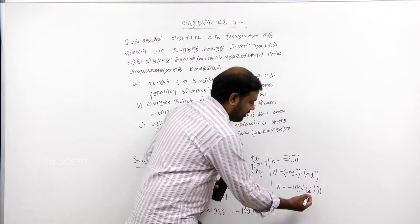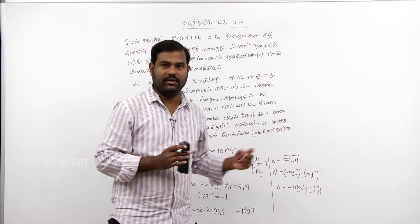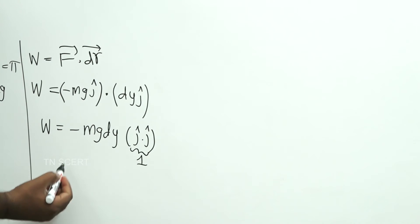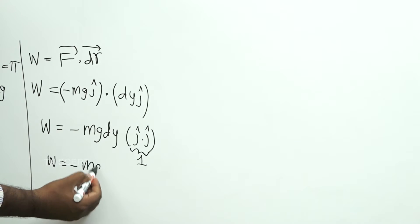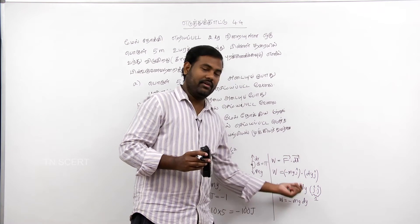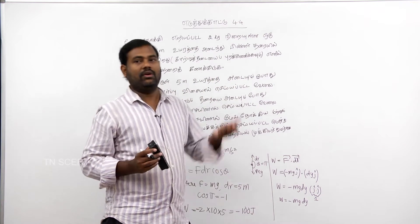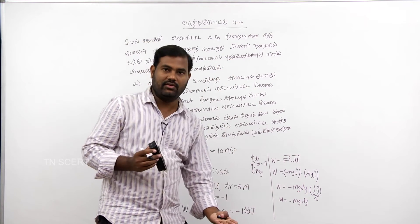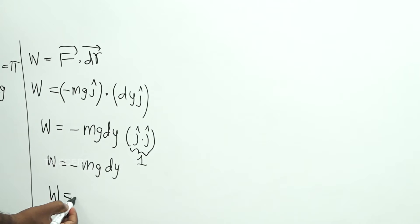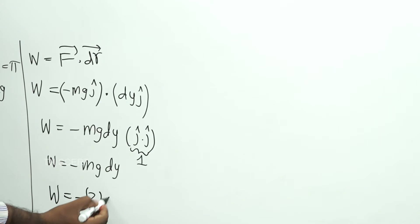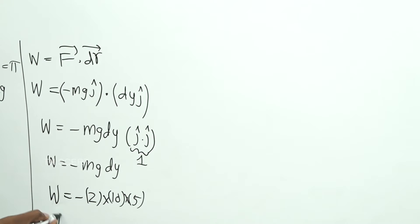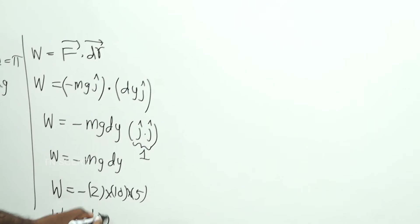j dot j equals 1. So W equals minus mg integrated over dy. The y coordinate changes from 0 to 5. So W equals minus 2 times 10 times 5, and once again I get minus 100 joules.